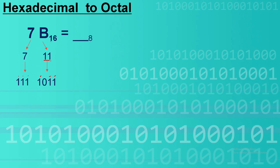Now since this is hexadecimal, which requires 4-bit binary groups, we will put an additional 0 here. Then the next step is to regroup these binary numbers from groups of four into groups of three.